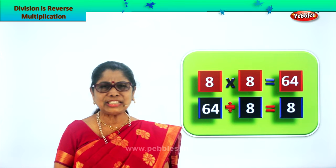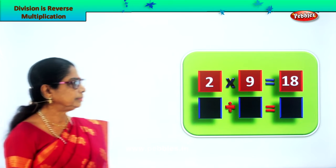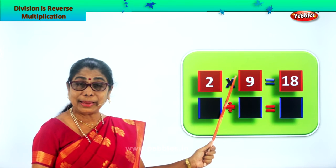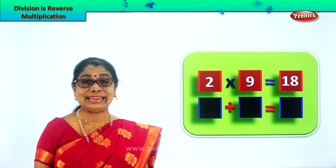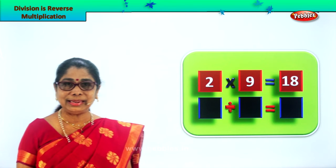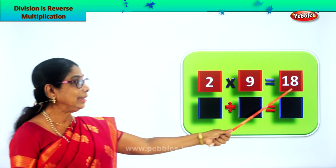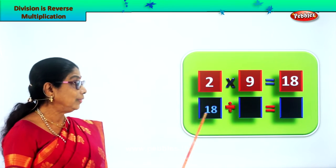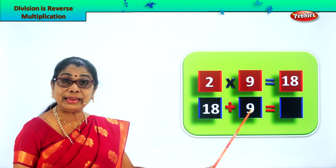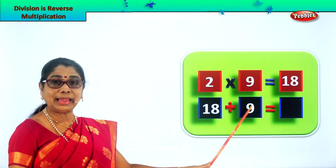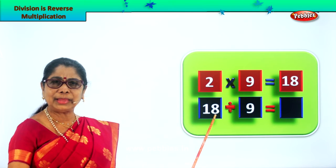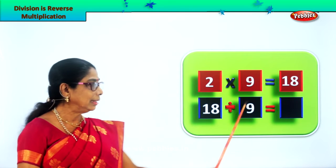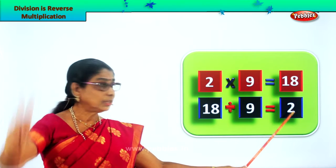Let's take another new sum. Two multiplied by nine is equal to 18. Two into nine is equal to 18. Two nines are equal to 18. Now let's divide 18 by nine. We write down here: 18 divided by nine. Nine goes into 18 how many times? Nine once is nine, nine twice is 18. So nine goes into 18 two times — we write the answer two.